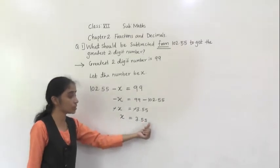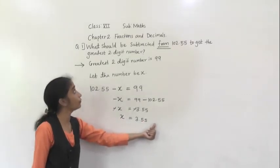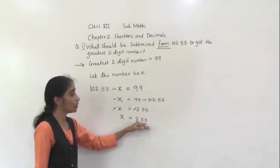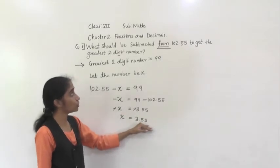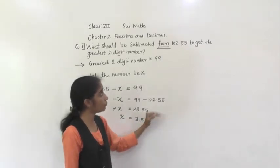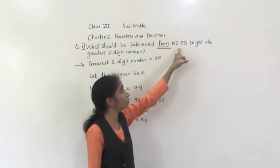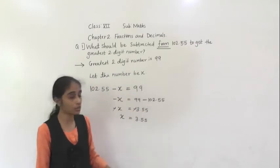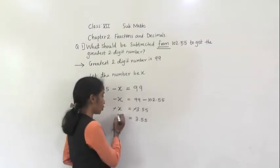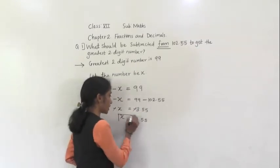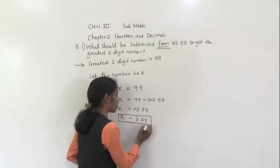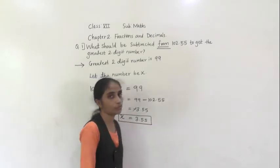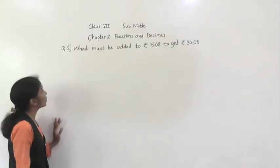So that number is 3.55. So what should be subtracted? 3.55 should be subtracted from 102.55 to get the greatest two-digit number. So our answer is X is equal to 3.55.